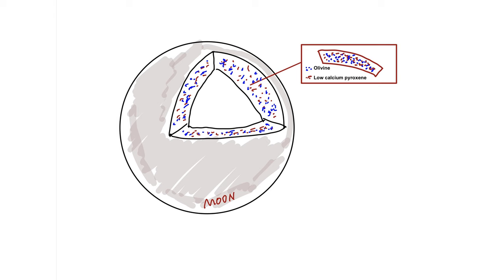The findings so far suggest that the moon's upper mantle is mostly made up of olivine and low-calcium-pyroxene mixture, rather than one being dominant as assumed previously.